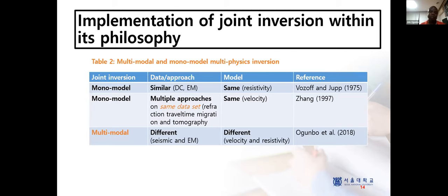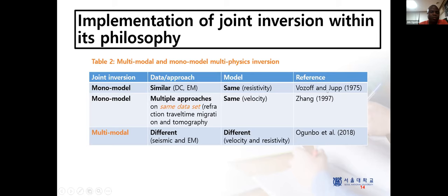The joint inversion philosophies have been implemented in several ways. Table two presents a summary. We have mono-modal — where your target is to invert the same model parameter but you can use different methods or approaches. For instance, mono-modal where both data types are similar — they use direct current (DC) method and the electromagnetic method, both giving you conductivity or resistivity — the same model parameters but different methods, as published by Vozov and Duke 1975.